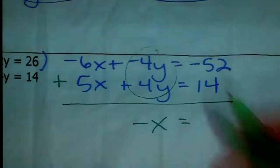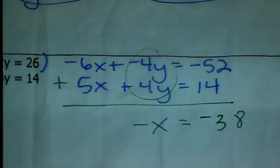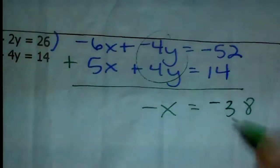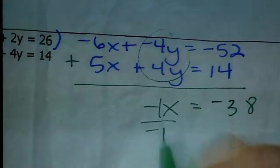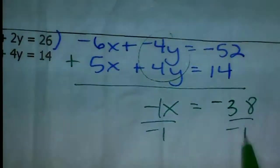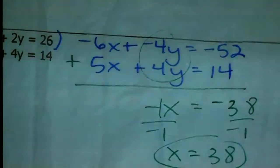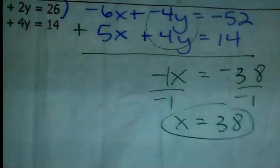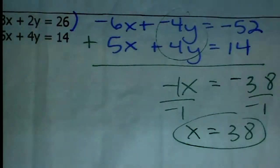Now we have opposite coefficients — negative 4Y and positive 4Y cancel out. Negative 6X plus 5X is negative X, or negative 1X. Negative 52 plus 14 is negative 38. Dividing each side by negative 1 gives X equals 38. Don't think that's too big a number — you get all kinds of numbers. So X equals 38.